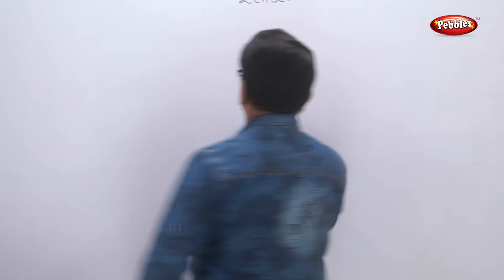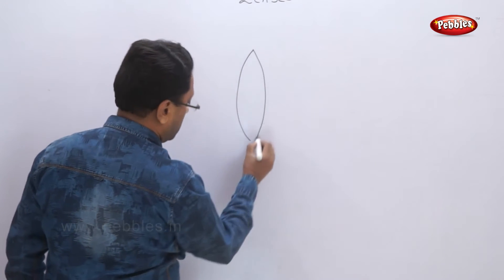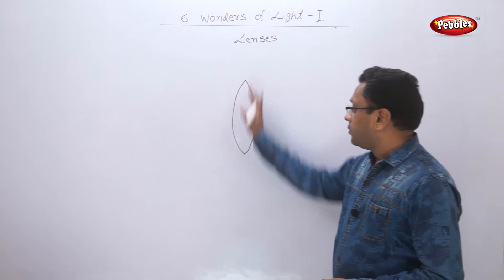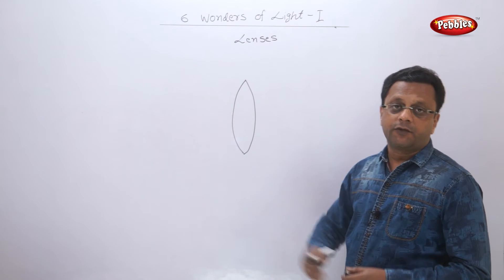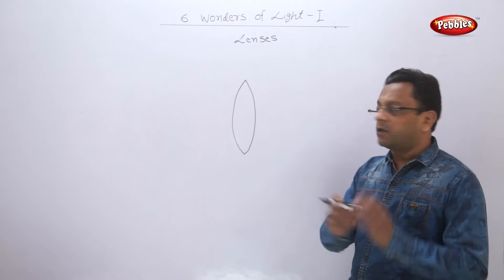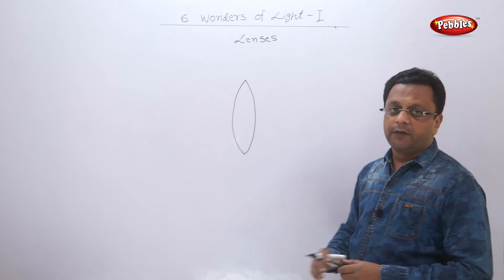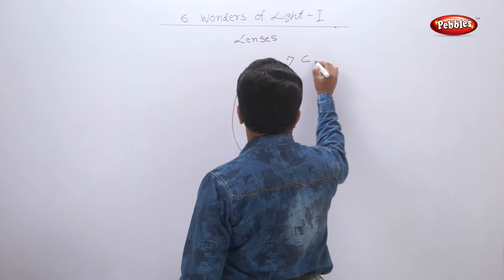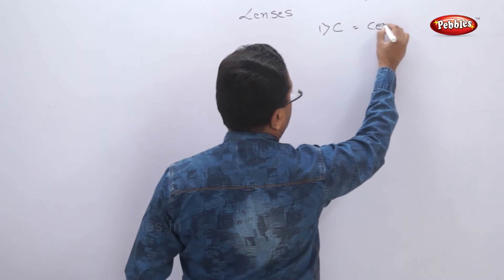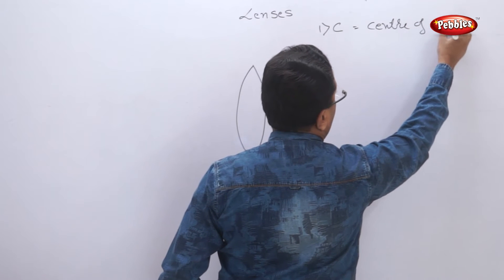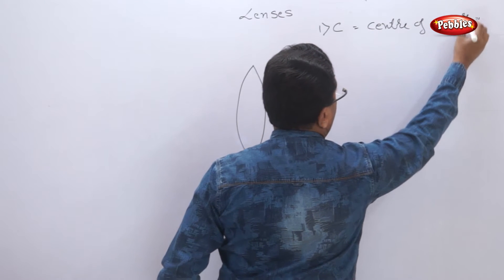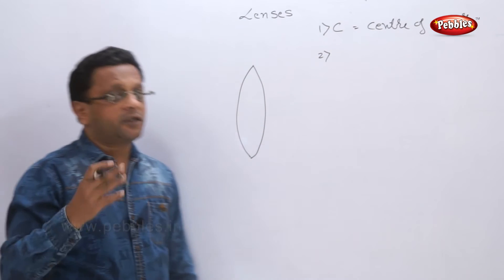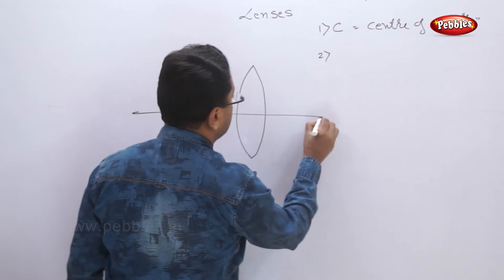Let us see an example of one convex lens. This lens is made up of two parts of spherical ball, glass ball. When you cut and join two parts, it will look something like this. So first we have C, which is center of curvature. Then just like our mirrors, we have one principal axis.